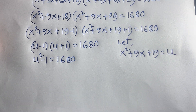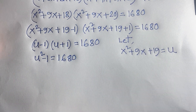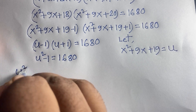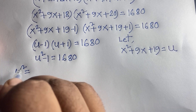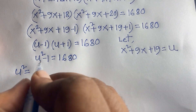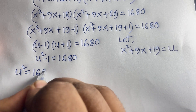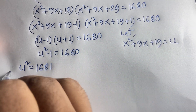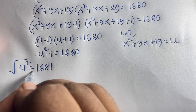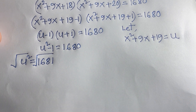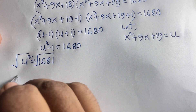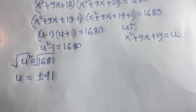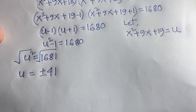Adding 1 to both sides gives u² = 1681. Taking the square root of both sides, u = ±41, since √1681 = 41.